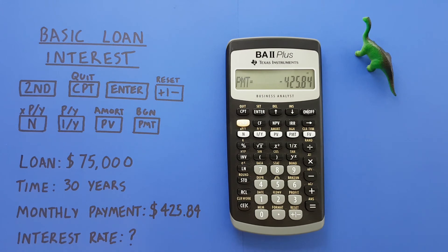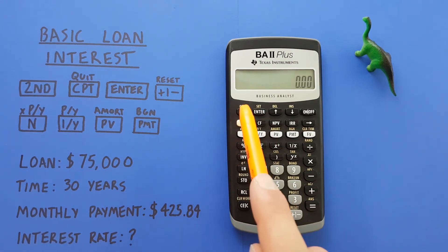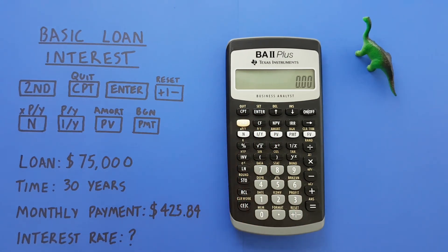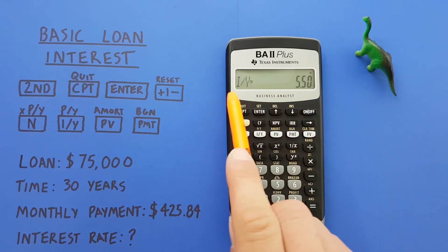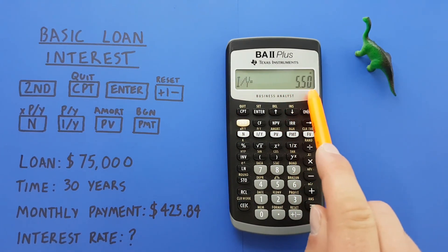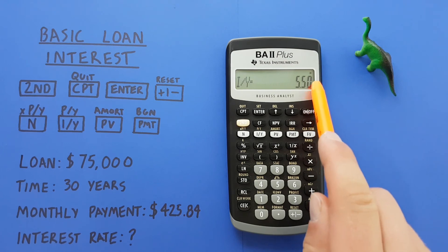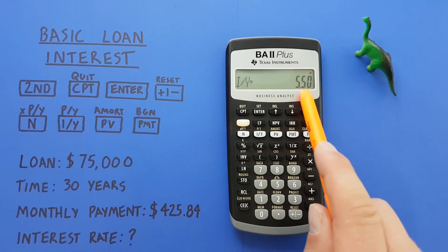Now all our variables have been entered. We can clear out of this and then press compute and our I over Y key here for our interest rate of 5.5. So that tells us our interest rate is 5.5%.